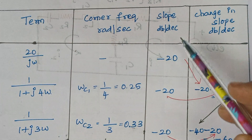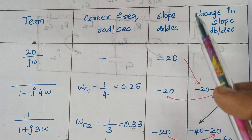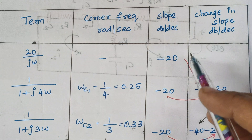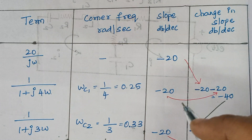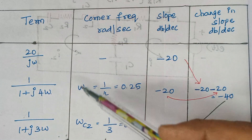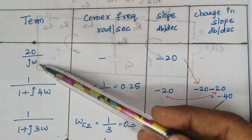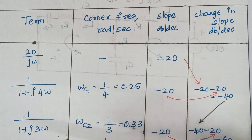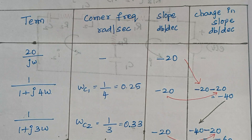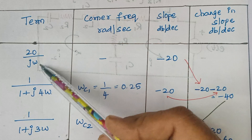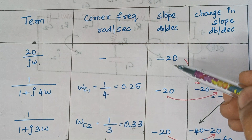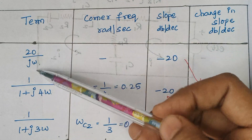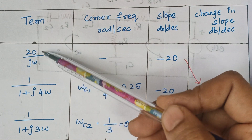To find the value of slope: a constant won't contribute any slope, so only the omega terms will contribute the slope, as well as the change of slope. Here there is an omega term in the denominator. Omega generally contributes a slope of 20 decibels per decade. Since it lies in the denominator, it contributes a slope of minus 20.